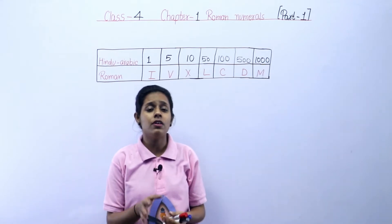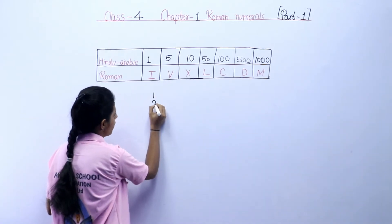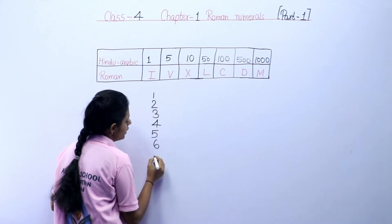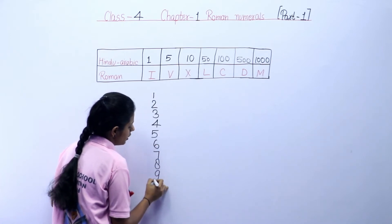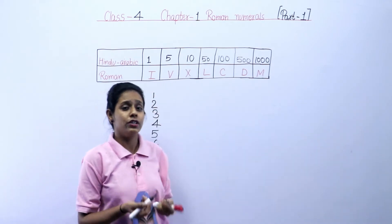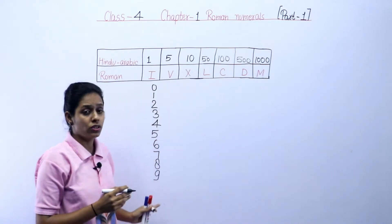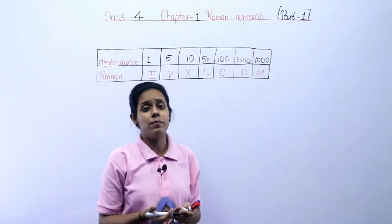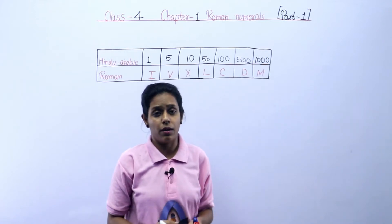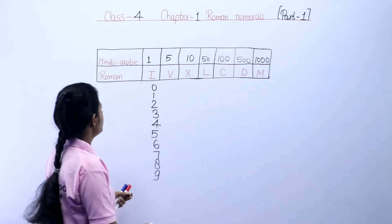What are Roman numerals? In this chapter, we learn about Roman numerals. Here we learn about 1, 2, 3, 4, 5, 6, 7, 8, 9. These numbers are called Hindu-Arabic numerals. They are called Hindu-Arabic numerals because first Hindus used these numbers and then Arabians used these numbers. These numbers are called Hindu-Arabic numbers, but the Romans used symbols to represent these numbers.